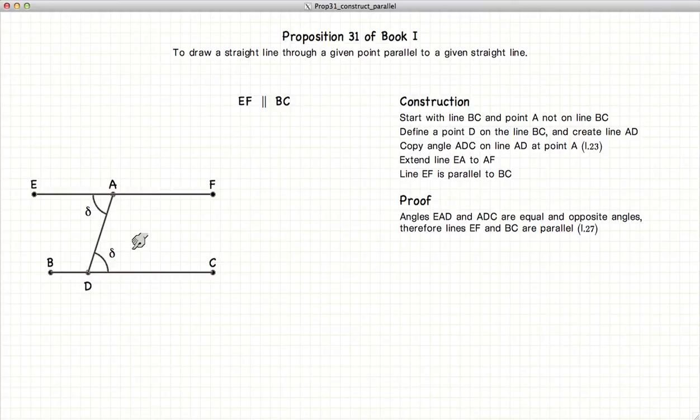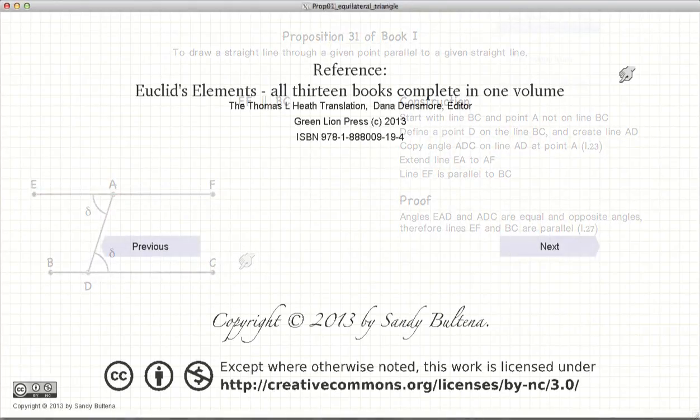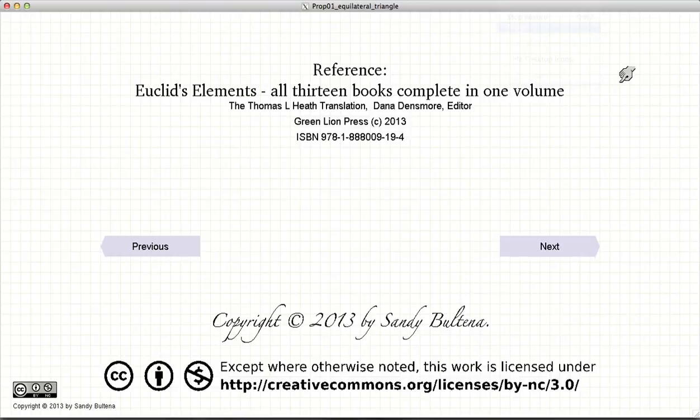So according to proposition 27, if the interior and opposite angles are equal, the two lines are parallel. So EF is parallel to BC, and that concludes this video presentation.